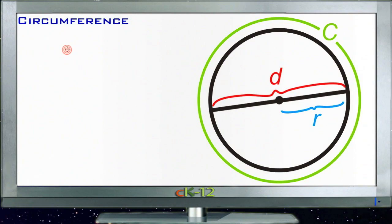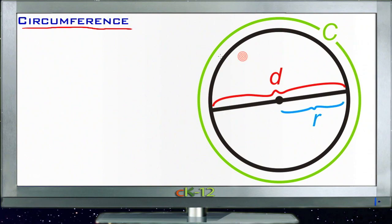On most of the shapes we've talked about so far we've dealt with perimeter and area, and when we're talking about a circle the perimeter is called the circumference, which just means distance around something. To calculate the circumference of a circle is actually really easy. We can do it either by knowing the radius, which is the distance from the center of the circle to the outside, or knowing the diameter, which is just the distance all the way across.